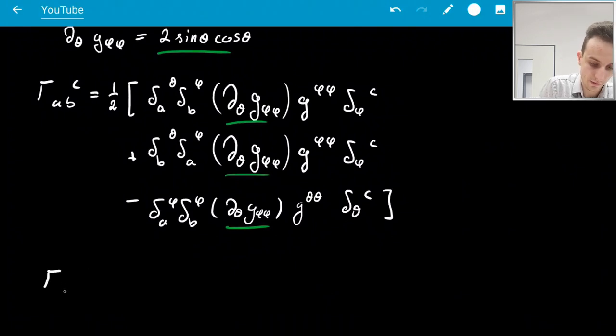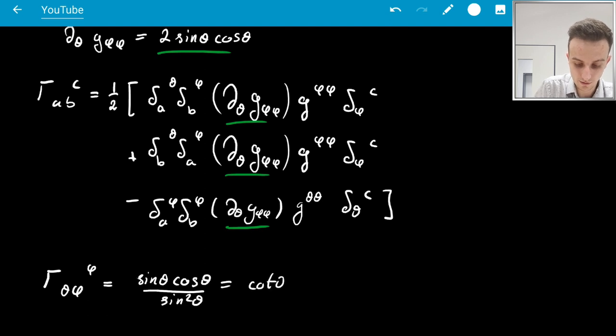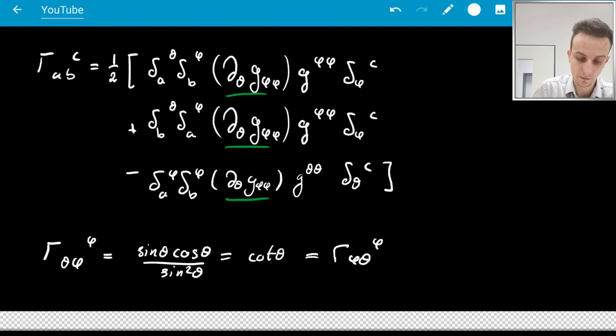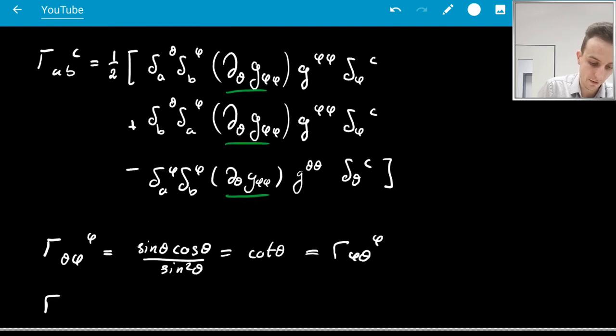So I now know that Γ^θ_φφ, this is the first term, is sin θ cos θ times G^φφ, which is sin² θ inverse, one over sin² θ, which is just cot θ. And I know by symmetry that this is Γ^φ_θφ, which is the second term.